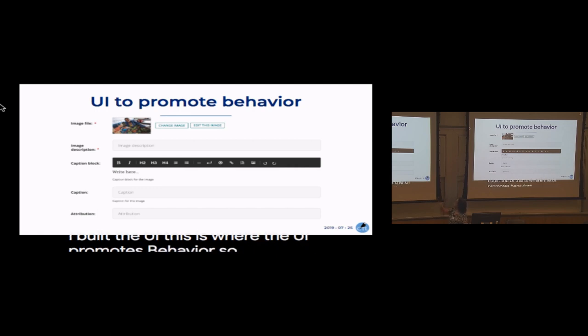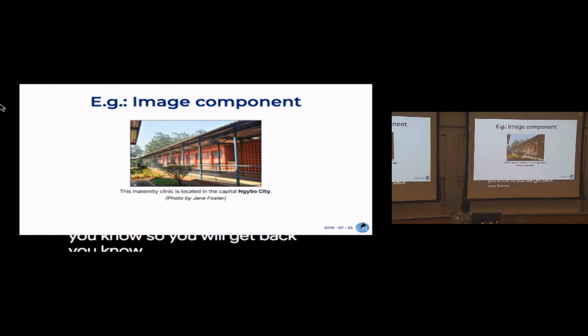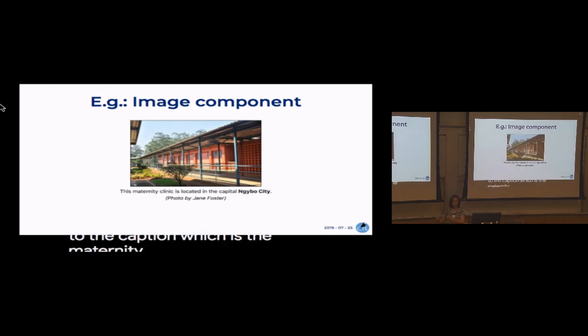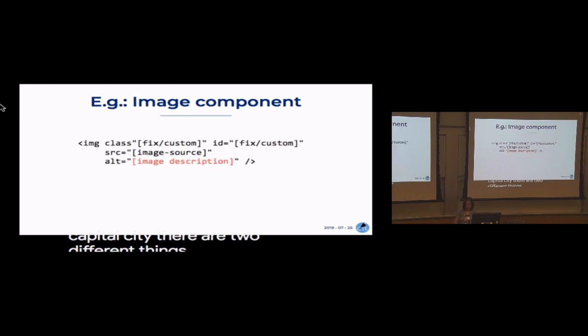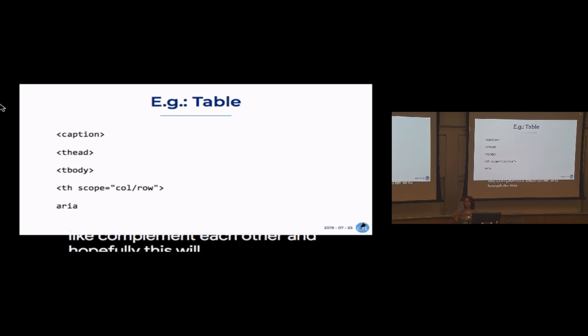This is where, when I built the UI, the UI promotes behavior. You have the image file, you ask them to put down the image description, and you provide a manual explaining the difference between caption block and caption, and what the attribution is. So when they put it in, the screen reader will read: 'A photograph of a clinic building' — that's the alt text — as opposed to the caption, which is 'The maternity clinic is located in the capital city.' They're two different things. We build it into the template and into the UI so they complement each other and model better accessibility behavior for content providers.